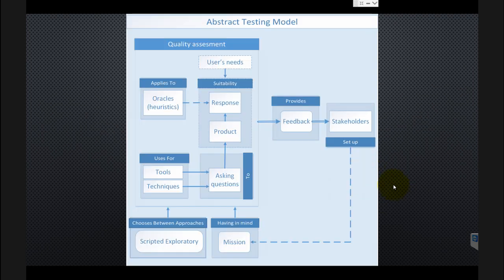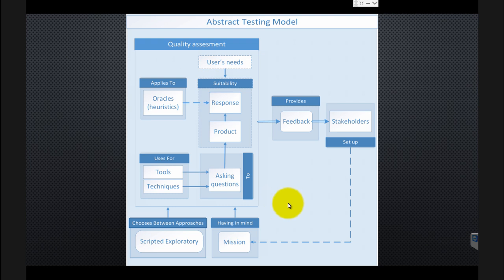The model looks like this. Let's have a short description for each abstraction represented here. First of all, we have stakeholders — those who are interested in the result of evaluation of our product. The product is something that can even be a person, or it can be software, or anything else that we need to evaluate. I do not represent the tester here — there is no box for him, but we can match him to someone here. The stakeholder gives us a mission, which is the goal for our testing — why we test the product. We also have approaches for testing: it can be scripted, exploratory, or something in between. Most of the time we will have something in between.